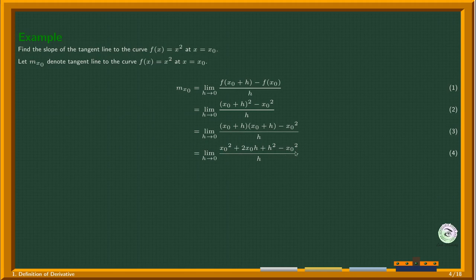Now I can cancel out the positive x₀² and negative x₀². These two terms have a common h—I can pull it out and cancel it out with the denominator.